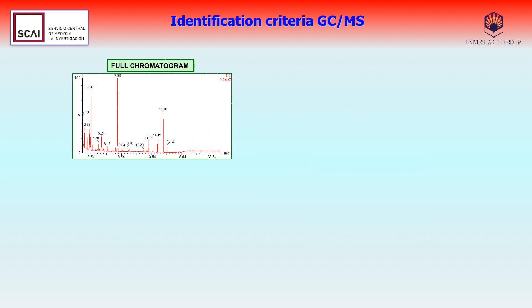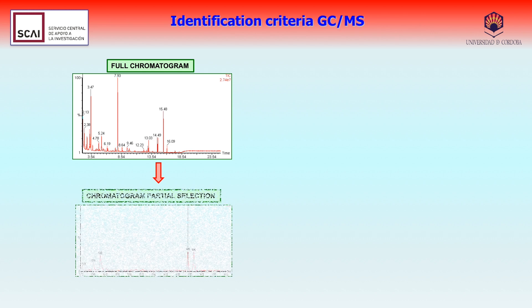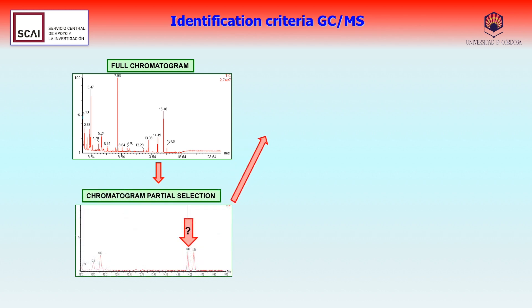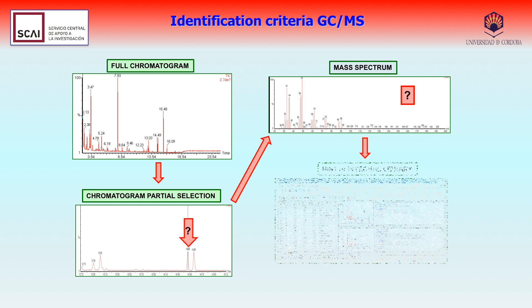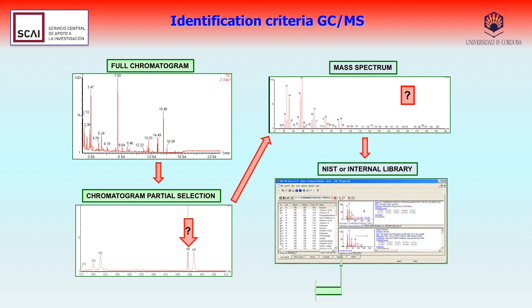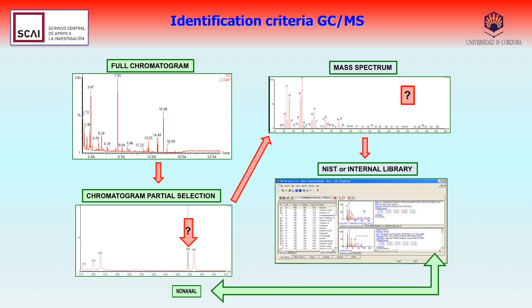For the identification of a compound with this technique, the steps to follow would be to select a part of the chromatogram to obtain its mass spectrum, and compare it with the NIST or internal library, where the unknown compound will be identified.